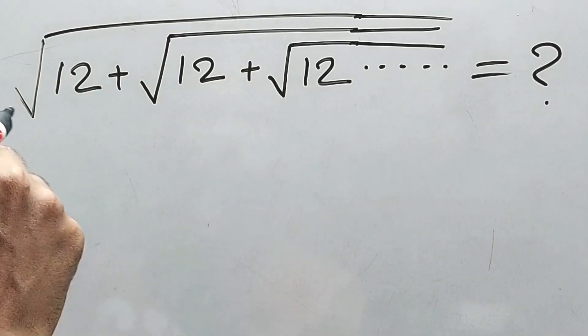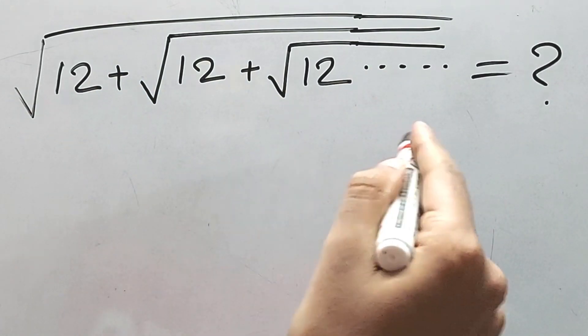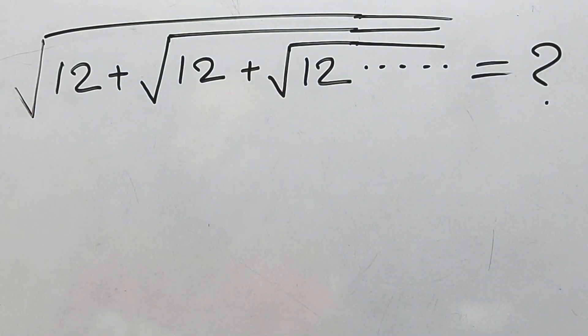Hi guys, this is Arindam. You're watching Brain Development. Let's jump in. So, square root of 12 plus square root of 12 plus square root of 12 dot dot dot up to infinity equals what? What is the value of this?